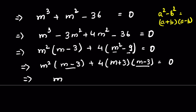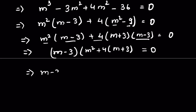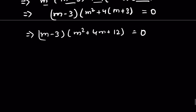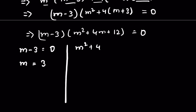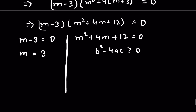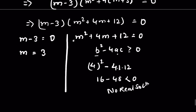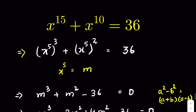Using a squared minus b squared equals (a plus b)(a minus b), we factor out (m minus 3), giving (m minus 3) times (m squared plus 4m plus 12) equals 0. We have two cases: when m minus 3 equals 0, then m equals 3. For m squared plus 4m plus 12 equals 0, we check the discriminant: b squared minus 4ac equals 16 minus 48, which is less than 0, so no real solution. Therefore m equals 3.